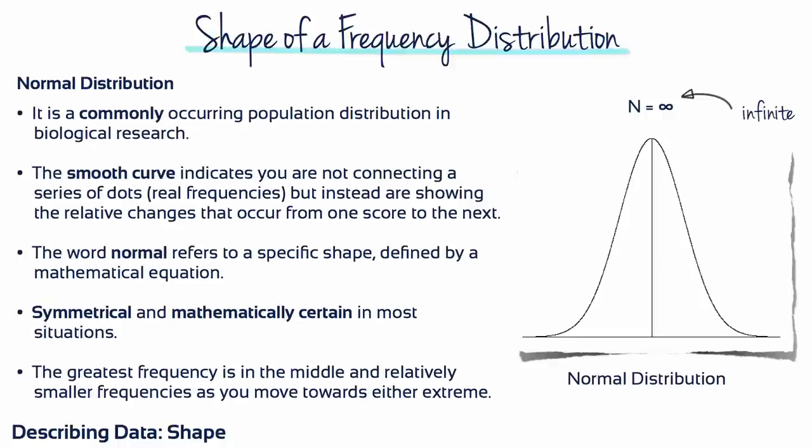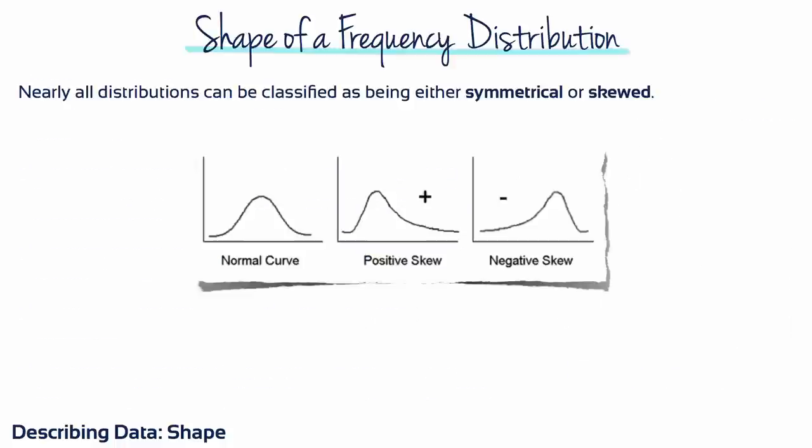The normal distribution occurs in most, but not all, research situations. Reality is not always normally distributed, which means that the distributions describing those particular observations are not shaped normally. So we need a new term to help us describe such distributions: skew.